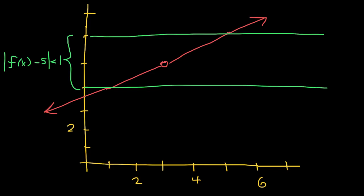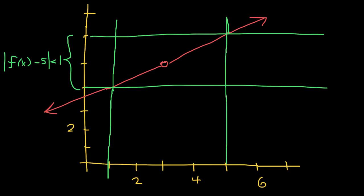I'm going to draw vertical lines through the points of intersection of the horizontal lines and my function — right there and right here. I'm drawing the vertical lines through these points of intersection, which turn out to be the points (1, 4) and (5, 6).